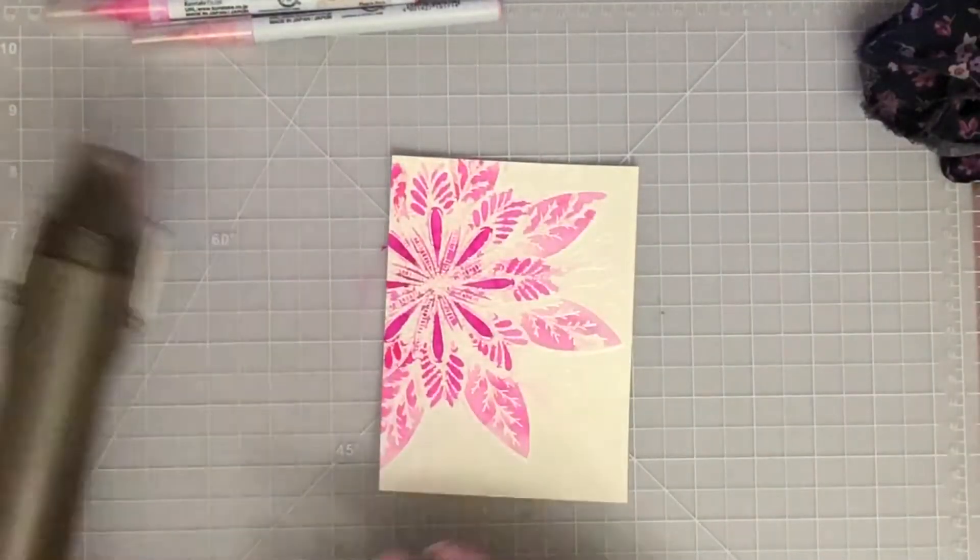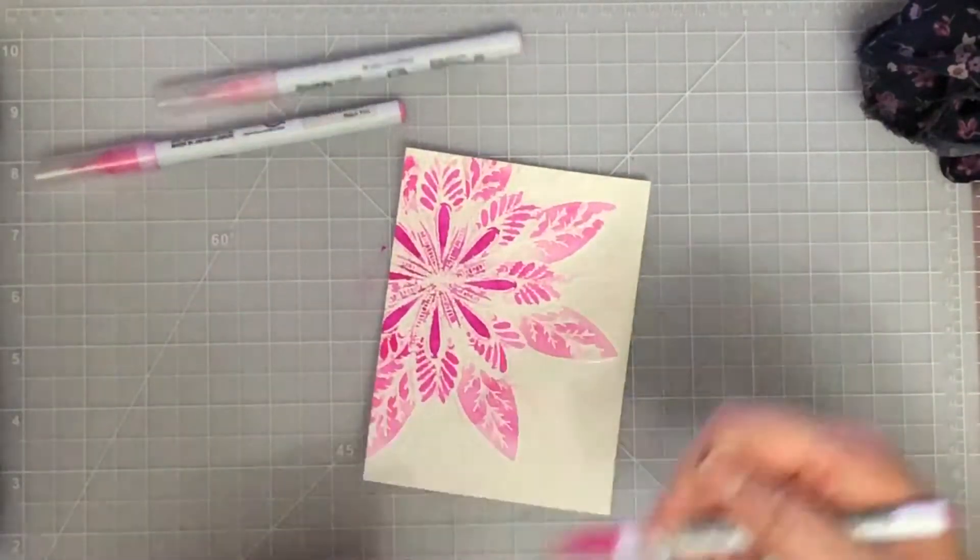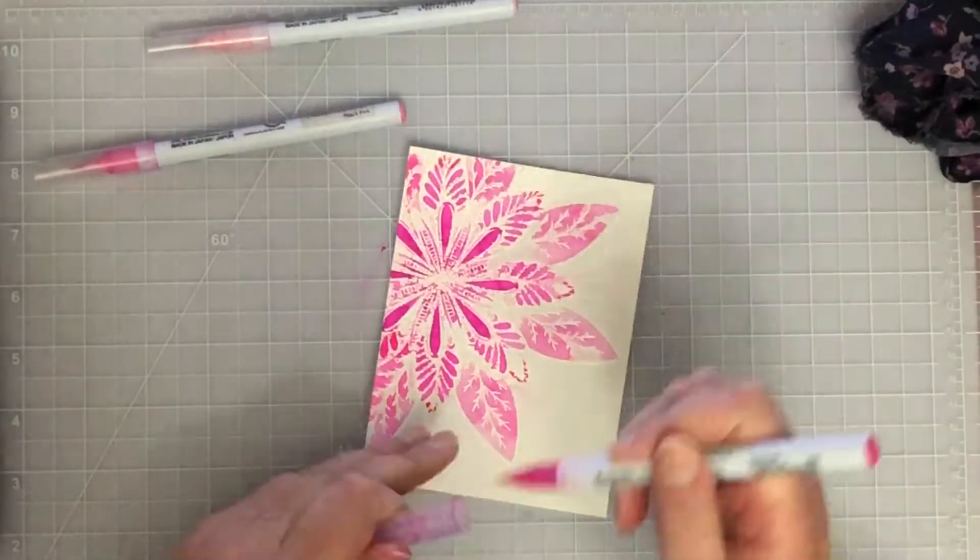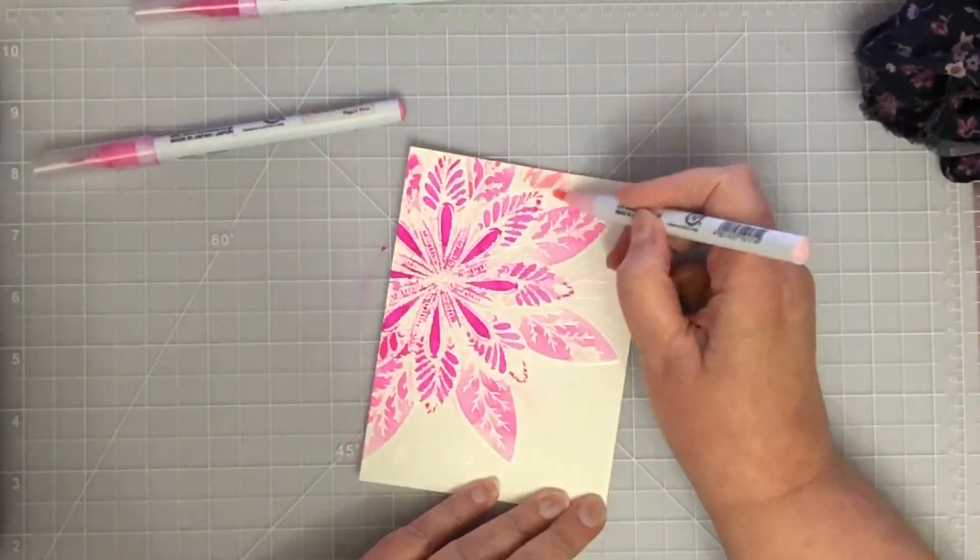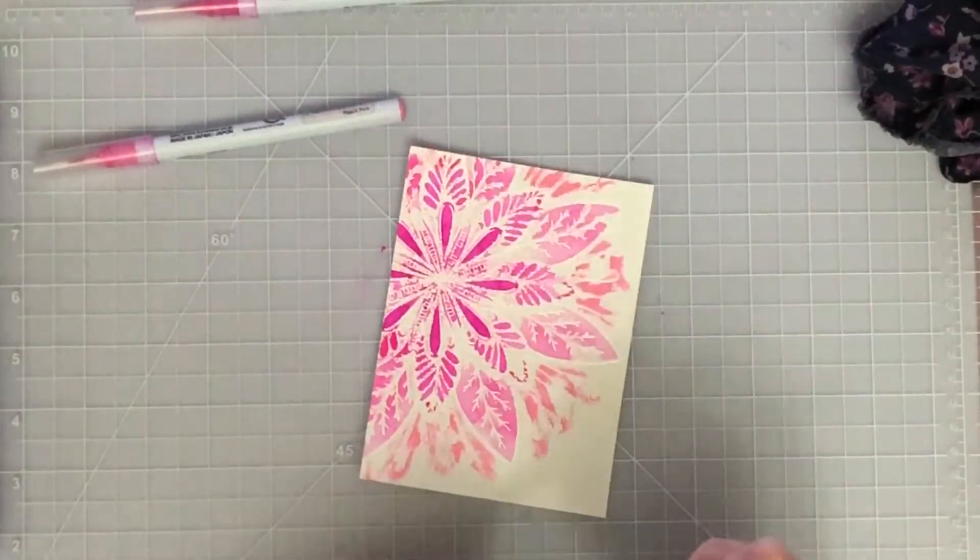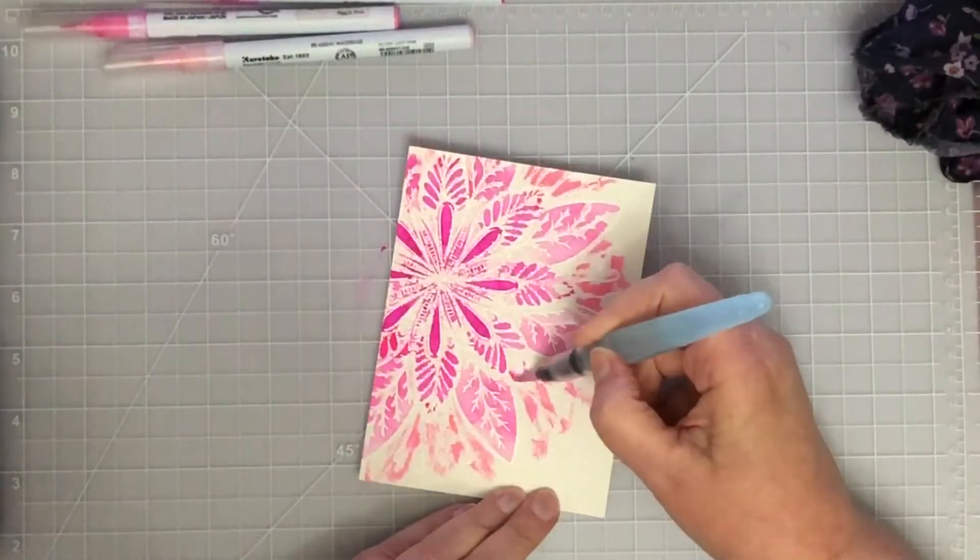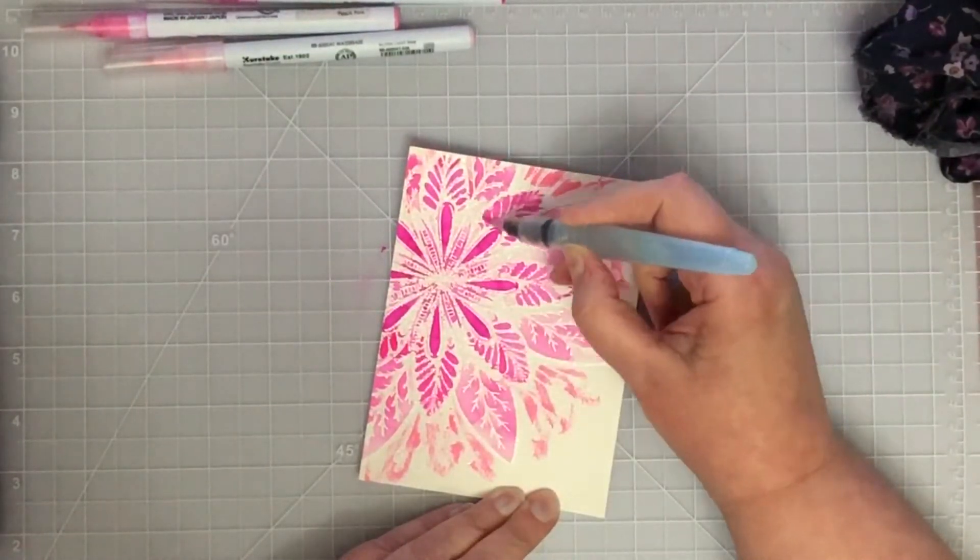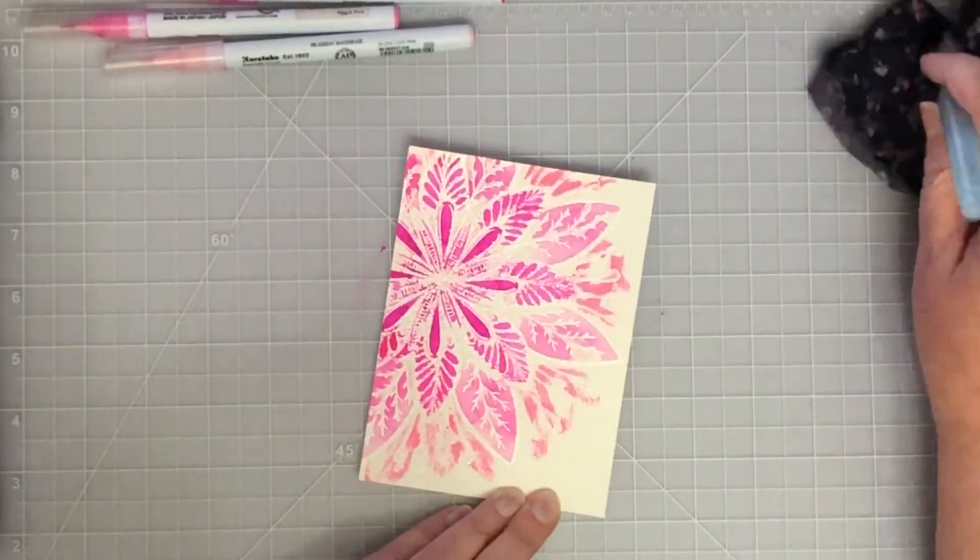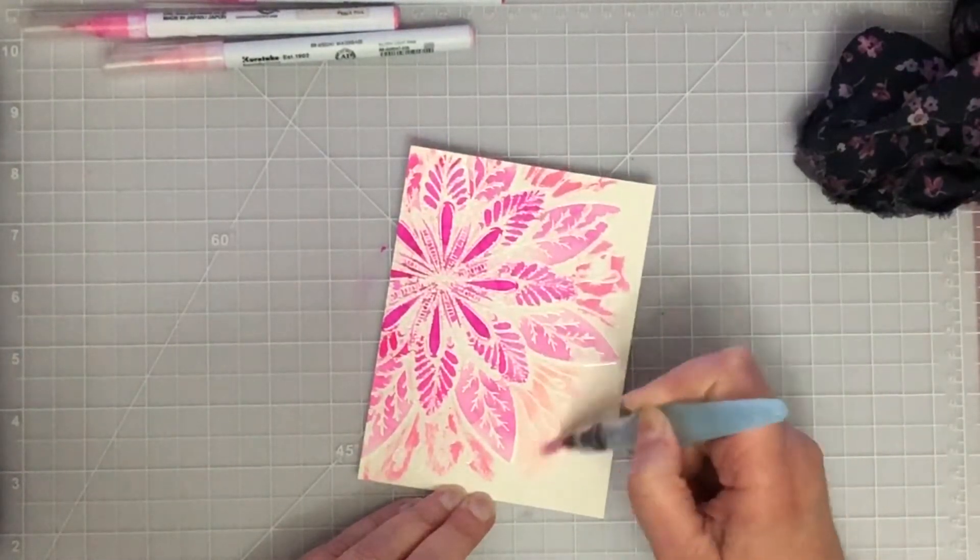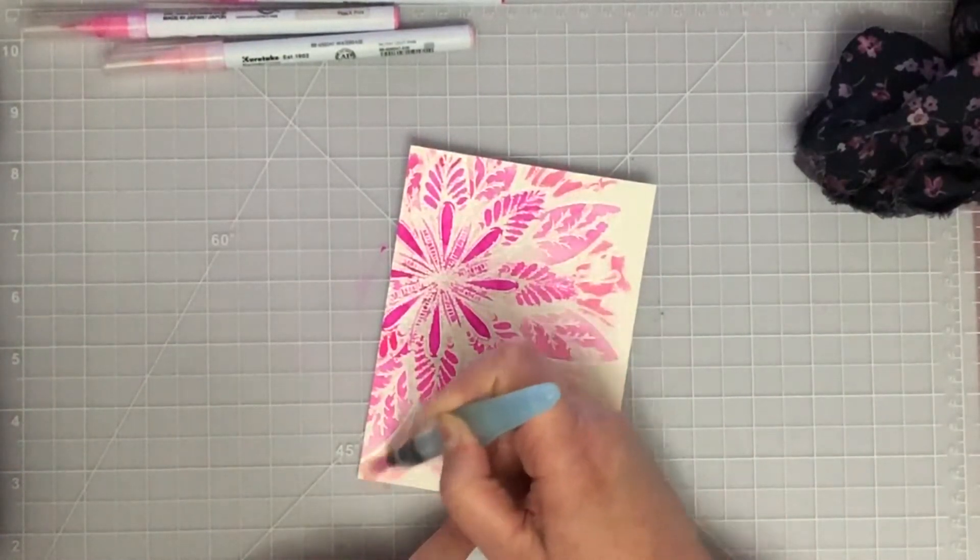I'm using my heat tool to dry that off, being careful not to overheat the panel because I don't want to remelt the embossing. I am going to add some more color. I'm using the palest pink on the outside here, but this time I'm going to go in with a water brush.